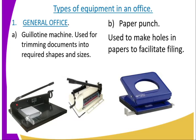For example, if you want a passport photo, you are going to print it on normal-size printing paper, then get the required shape using the trimming machine. So that is one of the general office equipment. Number two, we have the paper punch. Before storing any documents, you need to make holes. Placing documents in files requires holes, and the machine used to make holes is what we refer to as the paper punch. It is used to make holes that facilitate filing.